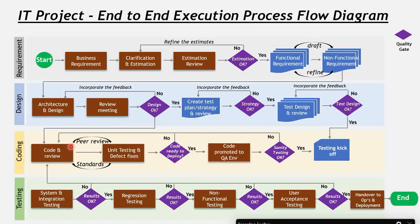If ready to deploy, the build is deployed into the QA environment. If not, it's an iterative process — fix the issues, observations, and feedback. Once promoted to the QA environment, the QA team performs sanity testing. If sanity passes, testing can be kicked off; if it fails, those issues go back to be fixed.